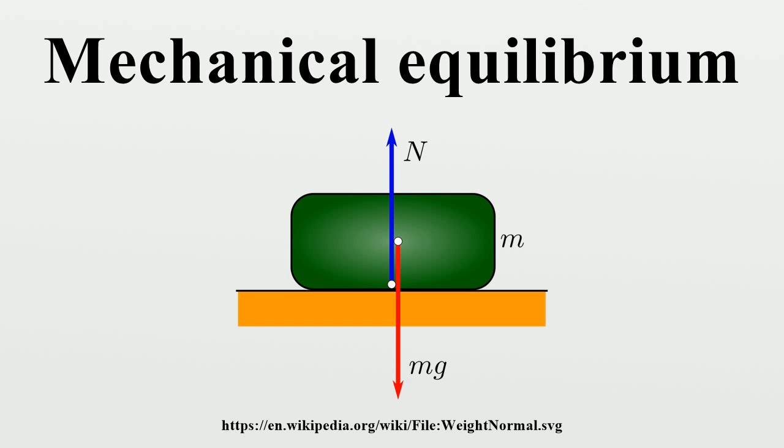A child sliding down a slide at constant speed would be in mechanical equilibrium, but not in static equilibrium.